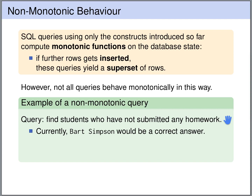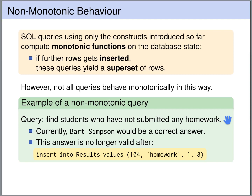However, if we insert one more row in the results table — namely a result for Bart Simpson — then Bart Simpson would no longer be among the result rows of this query. So an insertion of more rows in the database has led to fewer rows in the answer. This is a non-monotonic query.